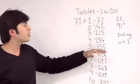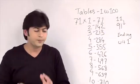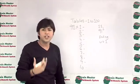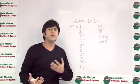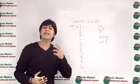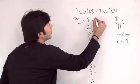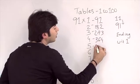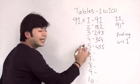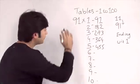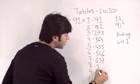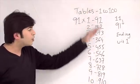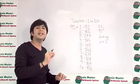Now I'll teach you the last table in this series: 91. Before 10 minutes you were wondering how to make the table of 91 or 98 or 95 — now within 2 minutes you've learned it. For 91: 9×1=9 and 1; 9×2=18 and 2; 27 and 3; 36 and 4; 45 and 5; 54 and 6; 63 and 7; 72 and 8; 81 and 9; 91×10 = 910. In this way we can make tables from 11 to 91 for all numbers ending with 1.